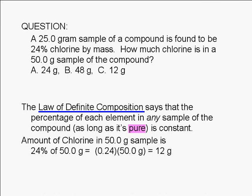The amount of chlorine in a 50 gram sample is 24% of 50.0 grams, or 0.24 times 50.0 grams, which is equal to 12 grams.